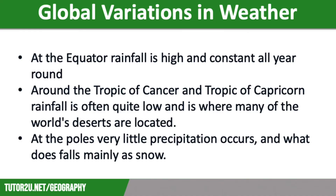How does global pressure and surface winds result in global variations in weather? At the equator, rainfall is high and constant all year round, where water vapour gets converted into convectional rain droplets. The Intertropical Convergence Zone, also known as the ITCZ, is a low pressure zone around the equator. Short bursts of torrential rainfall are caused by air rising, which forms areas of low pressure.